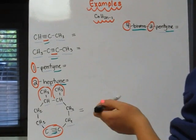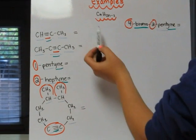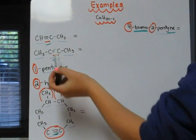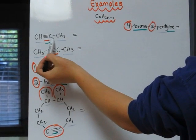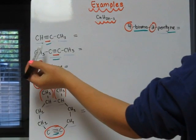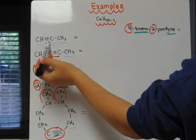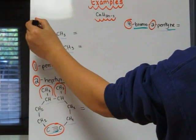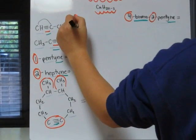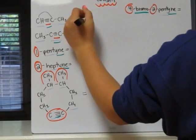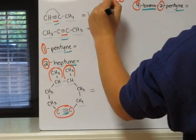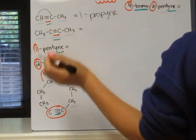So now we're doing examples for alkynes, for which the general formula is CnH2n-2. So our first example, we have one, two, three carbons, so we know that will give us the prefix prop. And our triple bond here for alkynes goes from the first carbon to the second carbon. So that means our bond is on one, to represent the carbon it's on, prop for three carbons, and then yne for the triple bond there.